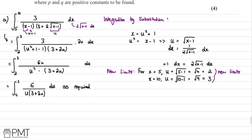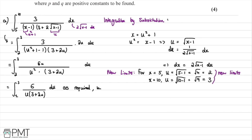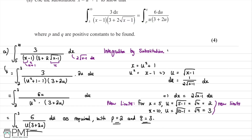This question was worth 4 marks. The first mark is for starting the substitution and getting an expression for dx. The second mark is for the full substitution into the integral expression. The third mark is for working out the new limits. The fourth and final mark is for reaching the required answer and providing a concluding statement.